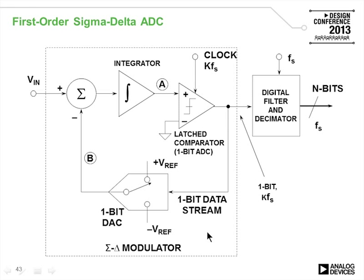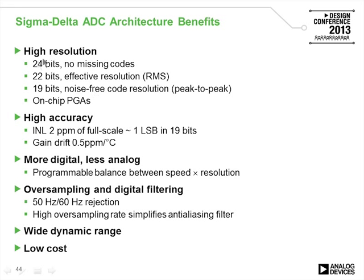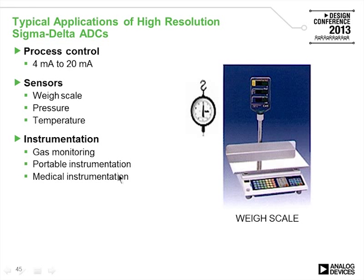A first-order sigma-delta modulator combines analog and digital circuitry to generate the noise shaping function. Benefits include up to 24 bits of no-missing-code resolution, approximately 19 bits of noise-free code resolution, good accuracy, predominantly digital implementation with little analog circuitry, excellent line rejection through oversampling and digital filtering, wide dynamic range, and relatively low cost since these highly digital parts run on low-cost CMOS processes without laser trimming.